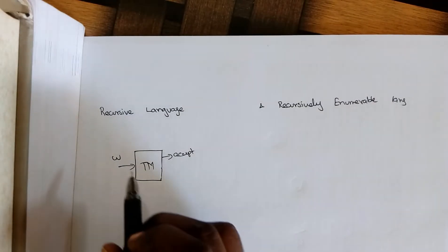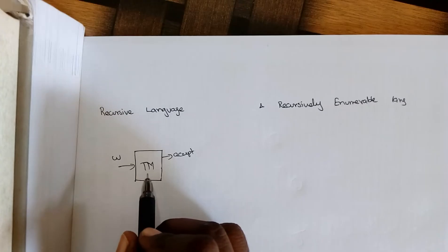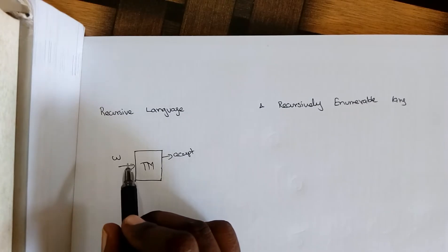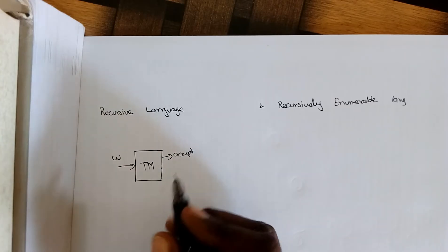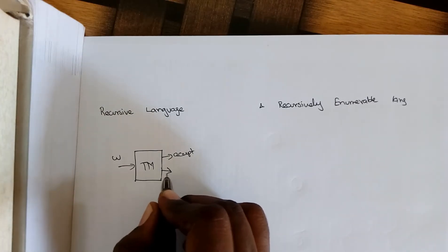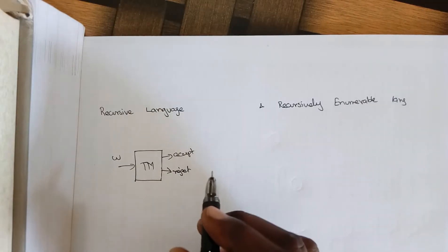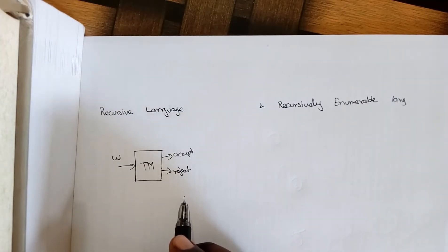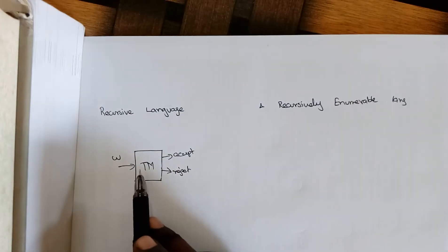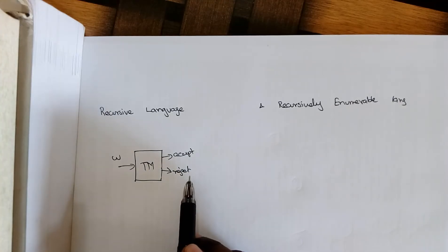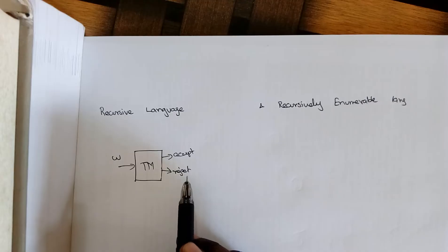A recursive language is one for which, when you construct a Turing machine and give some input, if the input is correct it goes to an accepting state, and if the input is wrong it goes to a rejection state. So whenever we give an input it either enters an accepting state or a rejection state. These kinds of languages we call recursive languages.